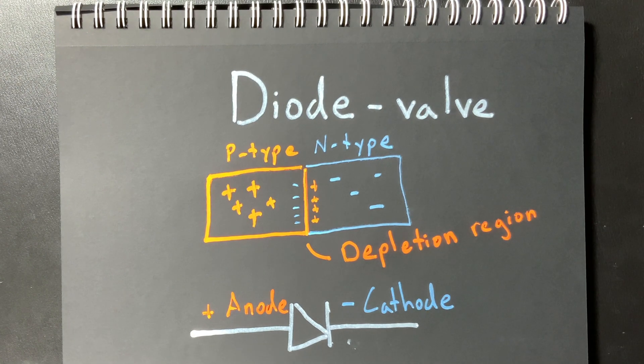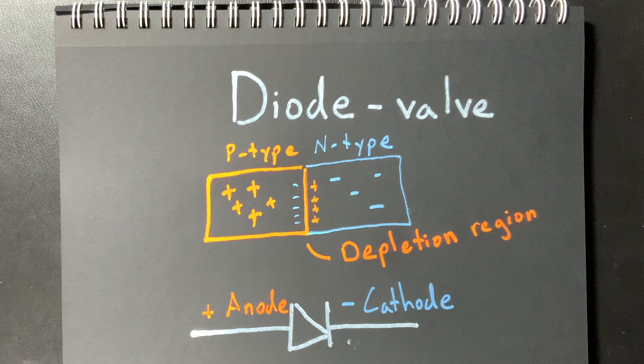I can always remember that the negative end is the cathode because cats are the most negative creatures in the world. They can look pissed doing anything. So just remember cathode negative. Cats are negative. Cathode negative.